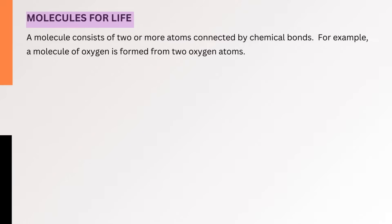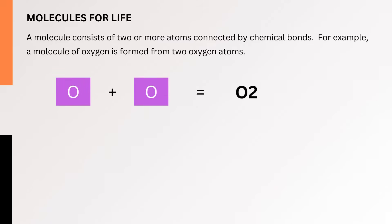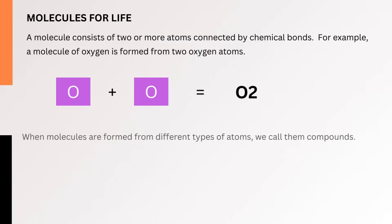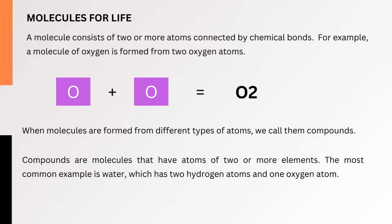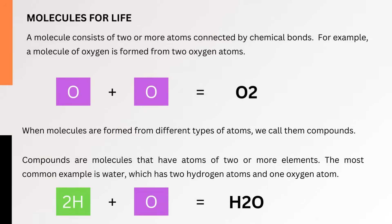Molecules for Life. A molecule consists of two or more atoms connected by chemical bonds. For example, a molecule of oxygen is formed from two oxygen atoms. When molecules are formed from different types of atoms, we call them compounds. Compounds are molecules that have atoms of two or more elements. The most common example is water, which has two hydrogen atoms and one oxygen atom.